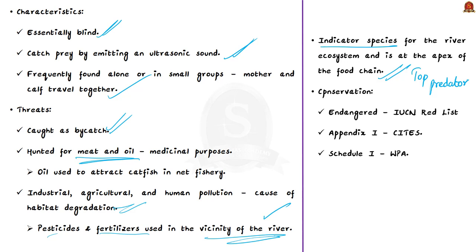Due to these threats, many conservation efforts have been taken. The species has been accorded the highest protection under the Wildlife Protection Act 1972, listed under Schedule 1. It is also listed as Endangered on the IUCN Red List, and listed in Appendix 1 of CITES — the Convention on International Trade in Endangered Species of Wild Fauna and Flora. These are the key facts regarding the Gangetic River Dolphin relevant from an examination perspective.